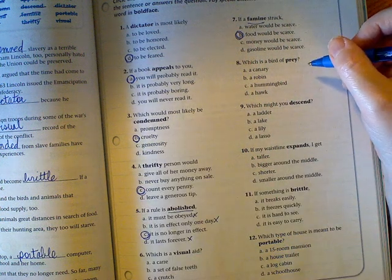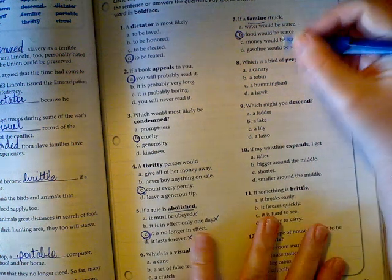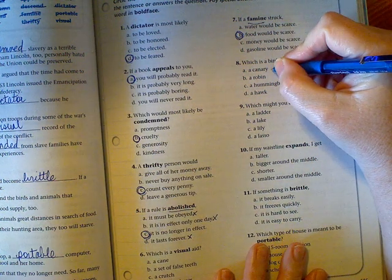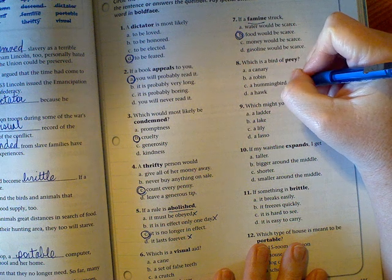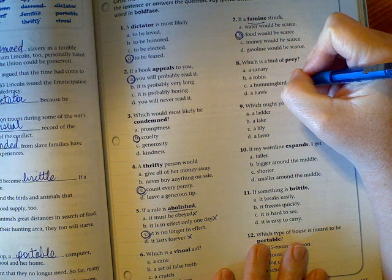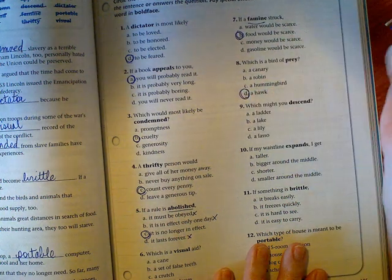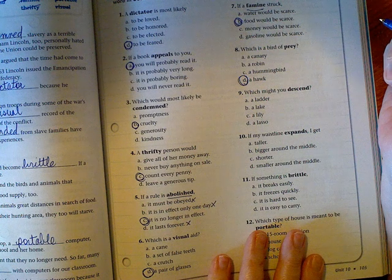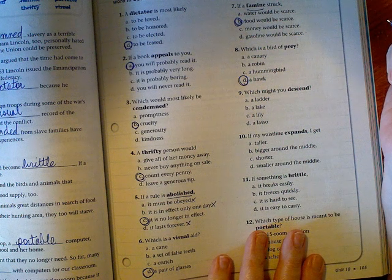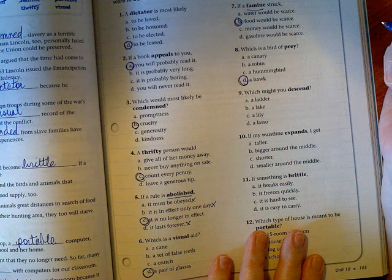Oh my word, now they're all birds, but you got to ask yourself which of these is going to really go hunting for something. A little cute yellow canary? A red robin? A little hummingbird that just flies in one place all the time? Or a hawk? It's definitely a hawk. Which might you descend? A ladder - I could see that as being right. A lake? I mean you could. A lily? I'm going to go with no on a lily. And a lasso? Mmm-mm.